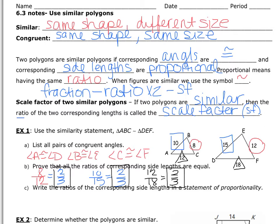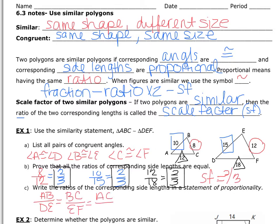If we want to go a step further and ask what the scale factor is — since all these ratios are the same, the scale factor between these two figures is two-thirds, meaning this triangle is two-thirds the size of the larger one. The statement of proportionality is written using side names: AB over DE equals BC over EF, which also equals AC over DF.